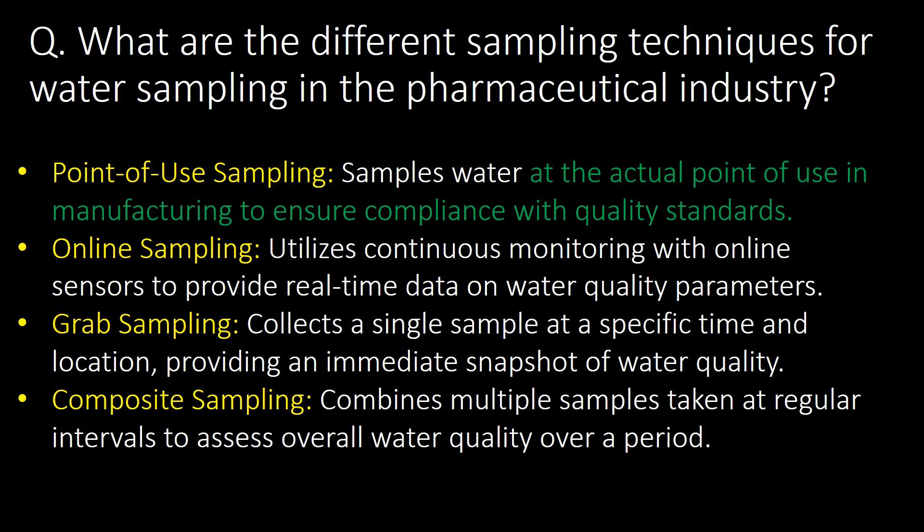What are the different sampling techniques for water sampling in the pharmaceutical industry? Point of use sampling, online sampling, grab sampling, and composite sampling are the four important sampling techniques for water sampling in the pharma industry.